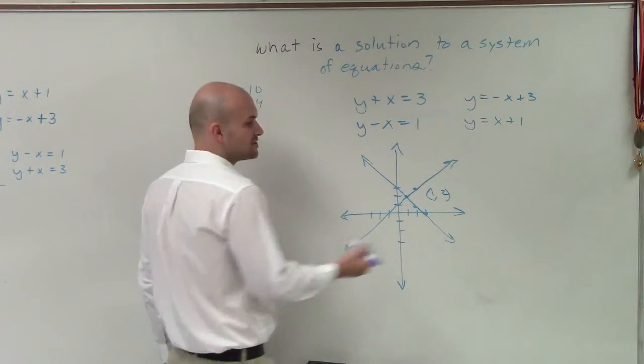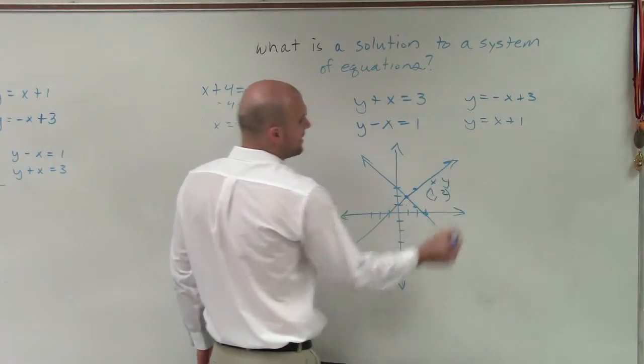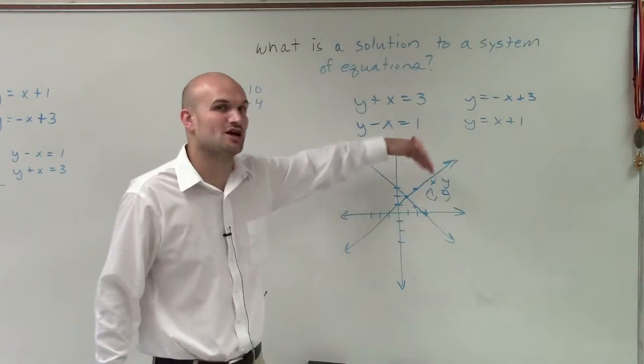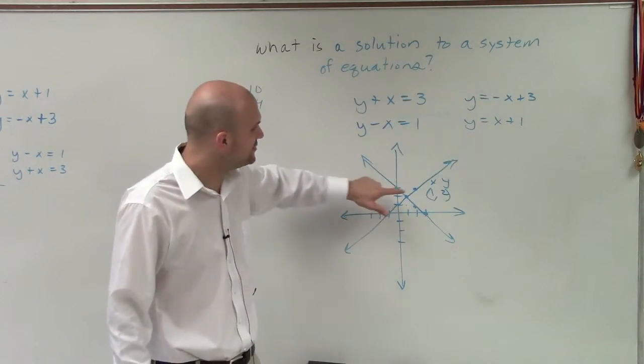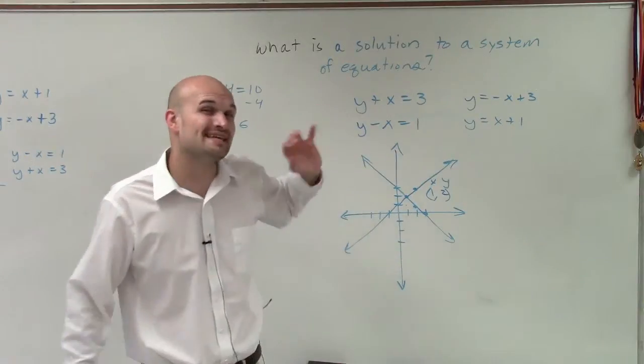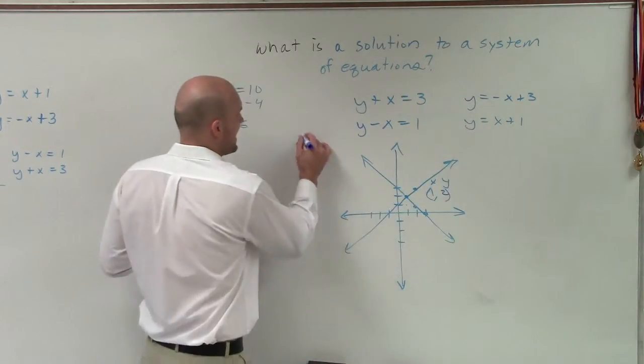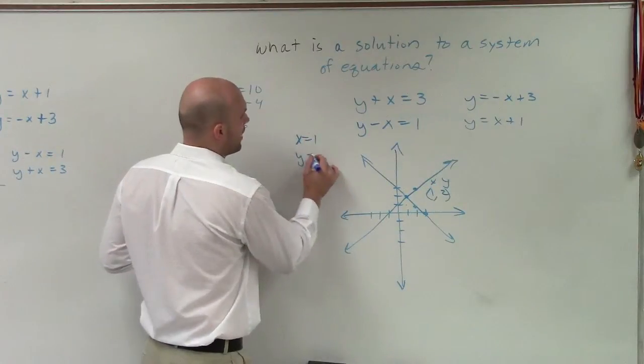And notice, remember, that intersection's a coordinate point where x and y. And what's important about our solution is we're going to learn how to algebraically solve for x and y. But graphically, you can see that these lines only intersect at one point. And at that intersection, x is equal to 1, and y is equal to 2.